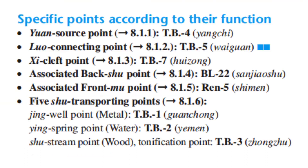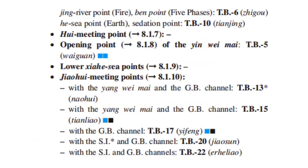Specific points according to their function. Yuan Source Point: Triple Burner 4. Luo Connecting Point: TB5. Xi Cleft Point: TB7. Associated Back-Shu Point: Bladder 22. Associated Front-Mu Point: Ren 5. Jing Well Point, Metal point: TB1. Ying Spring Point, Water point: TB2. Shu Stream Point, Wood point, tonification point: TB3. Jing River Point, Fire point, horary point of the Five Phases: TB6. He-sea Point, Earth point, sedation point: TB10.